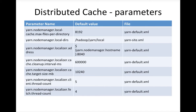These are the important parameters from a YARN perspective. The parameter yarn.nodemanager.local-cache.max.files-per-directory limits the number of files to 8192 by default — you can increase or decrease that. The parameter yarn.nodemanager.local-dirs controls the location where files will be created. By default it is slash Hadoop slash yarn slash local, but you can customize it to whatever path you want.